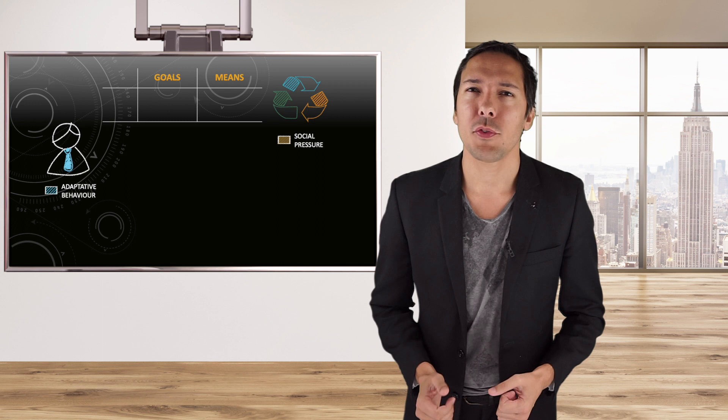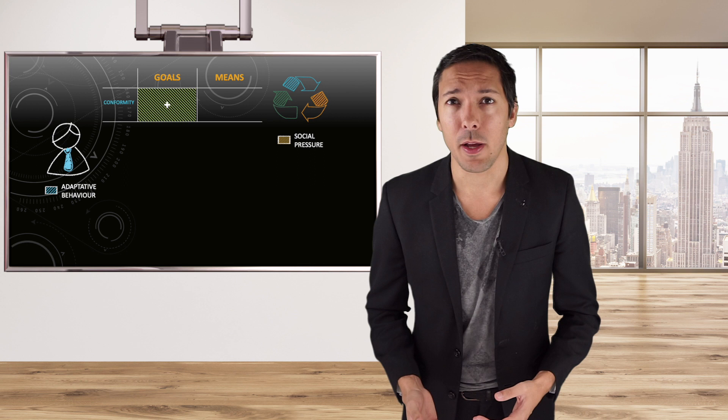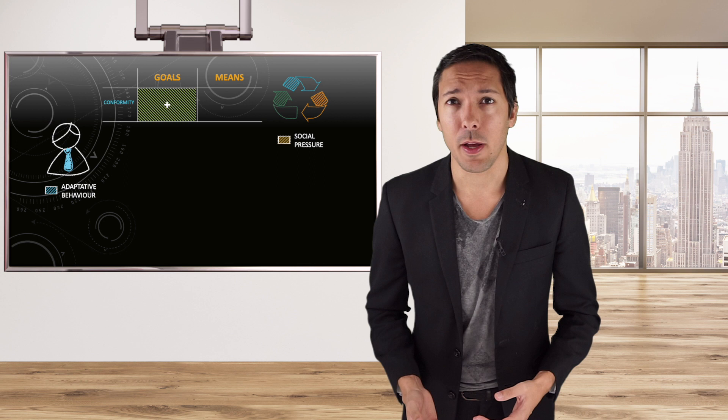Now, how do people deal with the strain? How do they adapt to this? Well, the most common behavior is called conformity. People accept the goals that society has set for them through the socially acceptable means. You want to be a rich engineer or lawyer? Go to university and get this diploma.